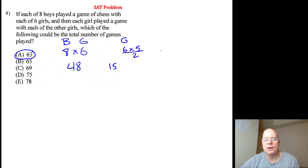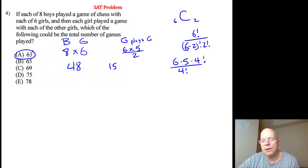Girl plays girl has to be thought of as a combination of six girls playing two at a time. It's 6 factorial over 6 minus 2 factorial times 2 factorial, or 6 times 5 times 4 factorial over 4 factorial times 2 times 1. The 4 factorials cancel and we get 6 times 5 over 2, which is what I was describing in a different way before.